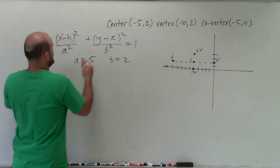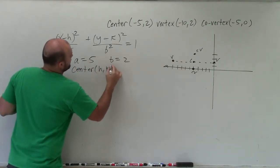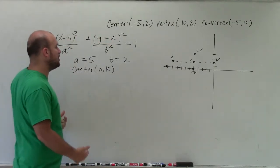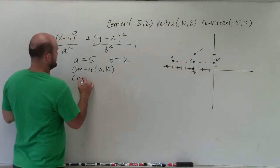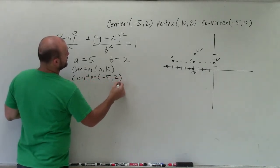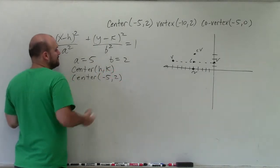Last thing we need to do is determine what h and k are, where h and k represent the center. And remember, it's opposite of h, opposite of k. So we look at our center, and we know our center was given to us, which is (-5, 2). So when I'm writing this in, I'm going to write opposite of -5 and opposite of positive 2.